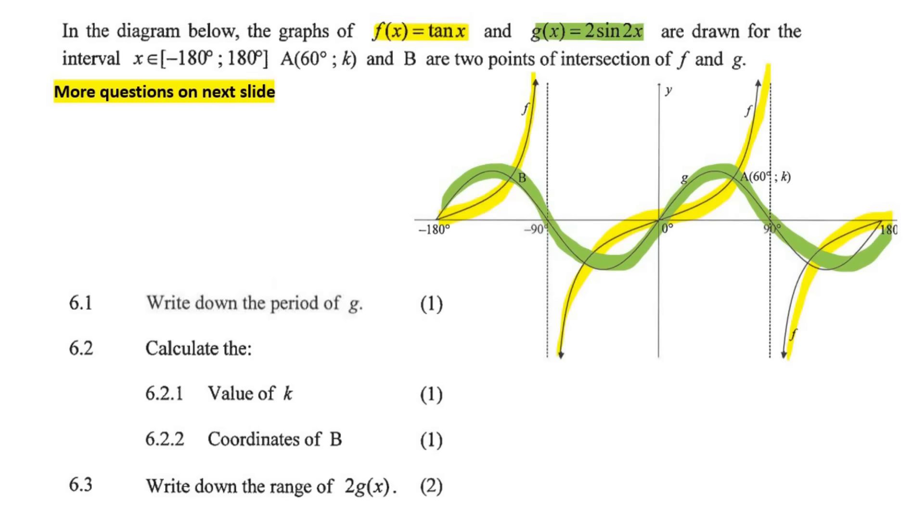Now the first question for one mark says, what is the period of g? The period is how long does a graph take to make one cycle. So you can see that it starts here and it completes one cycle there at 180 degrees. So that'll be the period. Another way to work out the period is to take the original period of that graph. We know that an original sin graph has a period of 360 for sin and cos. For tan, it's 180.